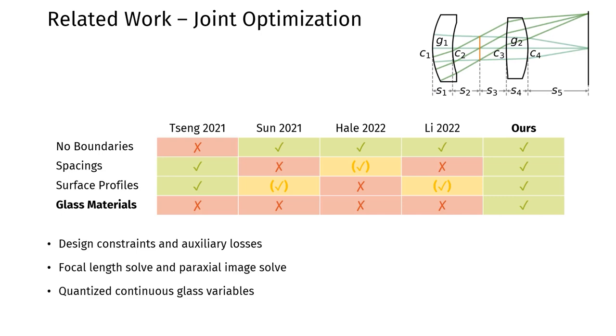To optimize all design variables freely despite the noisy gradients coming from the downstream task, we add design constraints and auxiliary losses, stabilize the process by solving for both the focal length and back focal length, and handle glass materials with quantized continuous glass variables.